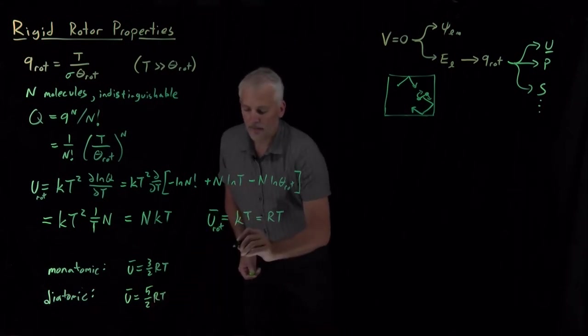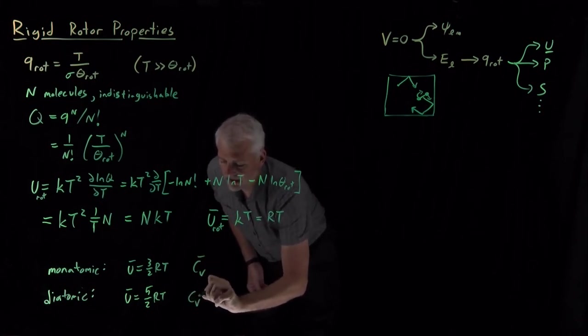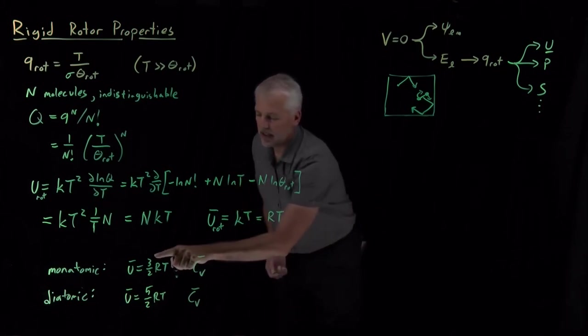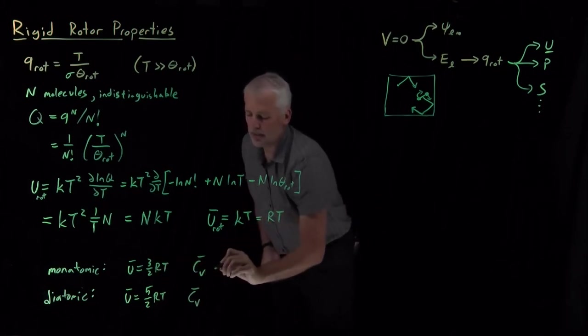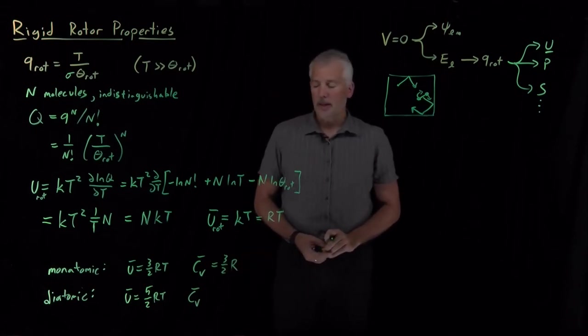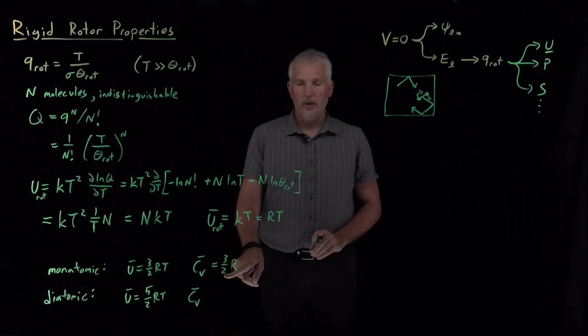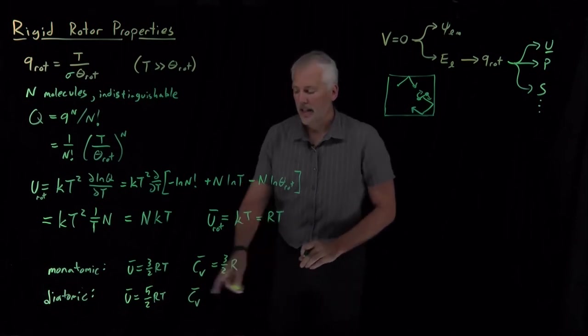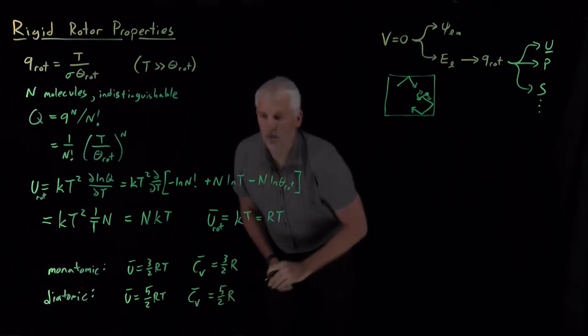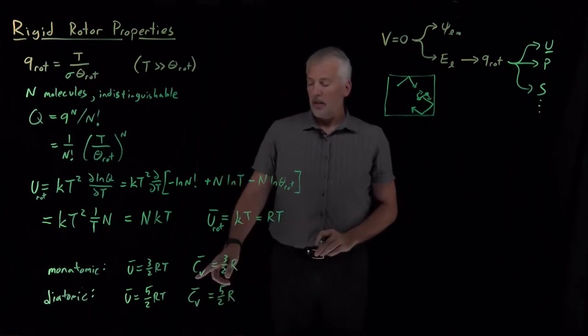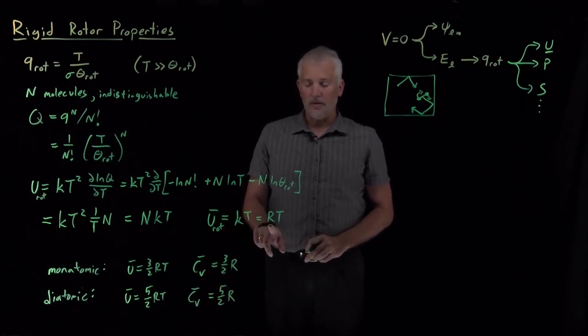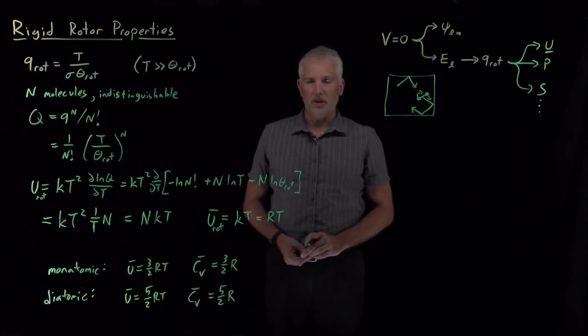If we also calculate the heat capacities, constant volume heat capacity, remember, is dU/dT. Just take the temperature derivative of these expressions, and the temperature goes away. We've already known that the heat capacity of a monatomic ideal gas, or the 3D particle in a box tells us, is three halves R. Now we find that for a diatomic ideal gas, it's five halves R. Three halves of which comes from the translational energy, particle in a box energy, one factor of R of which comes from the rotational contribution to the energy.